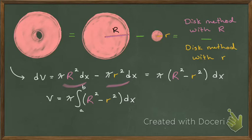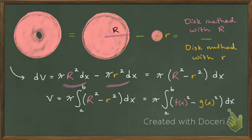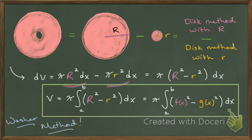This is really how I think about washer method: two disks subtracted from one another, always subtracting the missing piece — the blank space. Often you'll see this written in terms of functions, like F and G. I prefer to think about them as two disks with two different radii, but if you're more comfortable with F and G, that's totally okay. This is the washer method. I want to finish the example I started and then do a couple more.